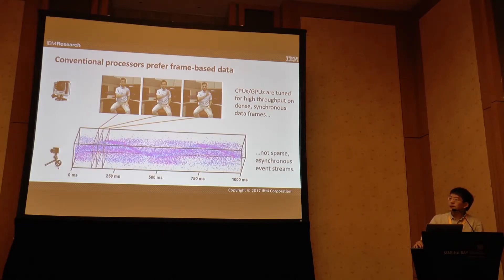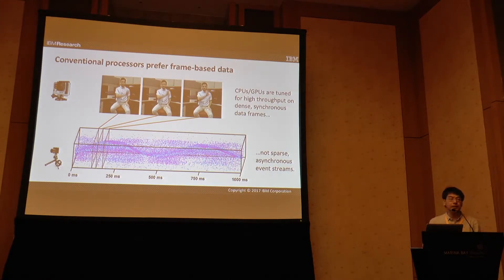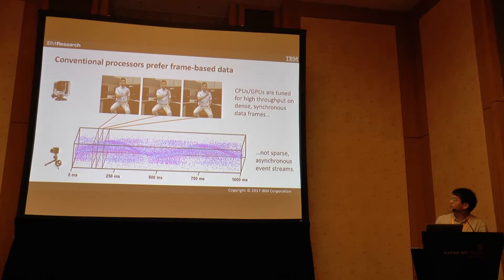If you look at the DVS event streams, these are really sparse, continuous event streams. There's a real opportunity to take advantage of the sparsity of the data.